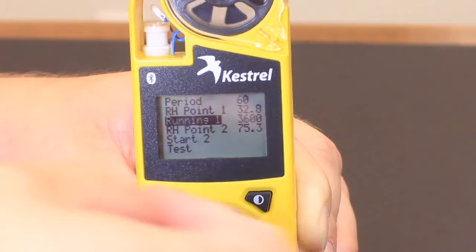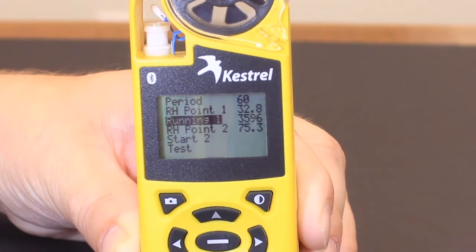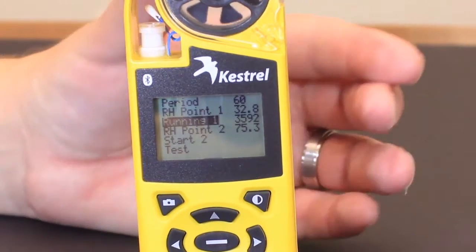And now when we're ready to set this up, we'll go to the first start point. We will hit the center button. You will see that the countdown starts at 3600. Now we are ready to take this and throw it in the first calibration chamber.